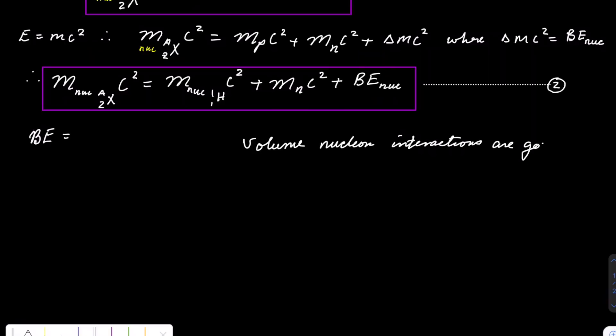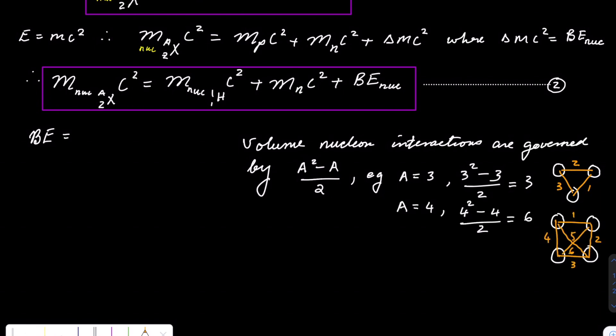The volume interactions is given by that formula. If we choose A equal to 3 just to test it, indeed we get the 3 interactions as shown. Then we can choose 4 nucleons and we get 6 interactions. Therefore, we can conclude that the binding energy is directly proportional to the number of nucleons. And the binding energy per nucleon will be given by a constant aV multiplied by the number of nucleons. So volume interactions are given by this expression in the binding energy formula.